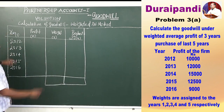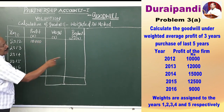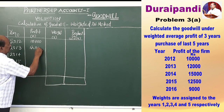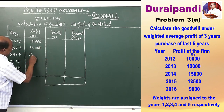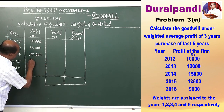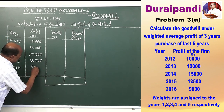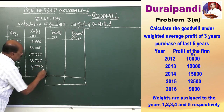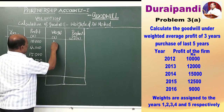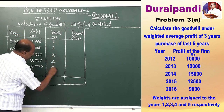In the year 2012, the profit was 10,000; in 2013, 12,000; in 2014, 15,000; then 12,500 for 2015; and in 2016, 9,000. Weights are assigned to each year: 1, 2, 3, 4, and 5.